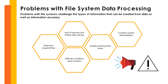What are the problems with file system data processing? First, extensive programming — as seen earlier, each department has its own file management and report programs, and creating a new report requires building it from scratch. Second, lack of security and limited data sharing — each department handles its own data, making it hard to share with others. Additionally, there is difficulty in getting quick answers, since data is managed by different departments and you need sign-off or approval to access specific information. Other problems include lengthy development times, related to extensive programming, and complex system administration, among others.